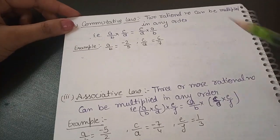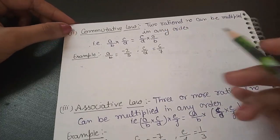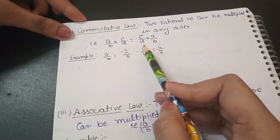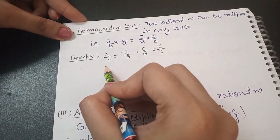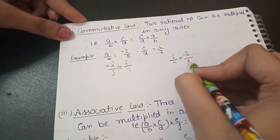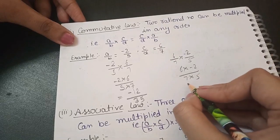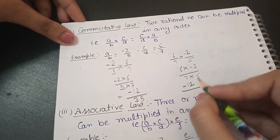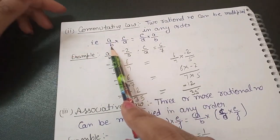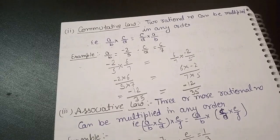The second property is the commutative law. The commutative law says that two rational numbers can be multiplied in any order and the result remains the same. That is, a/b × c/d = c/d × a/b. Whether we multiply them in one order or the reverse order, the same value will come.